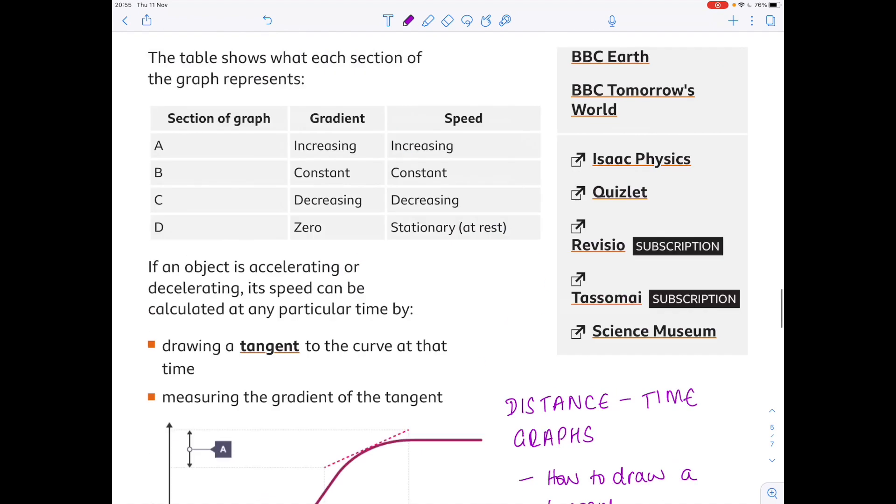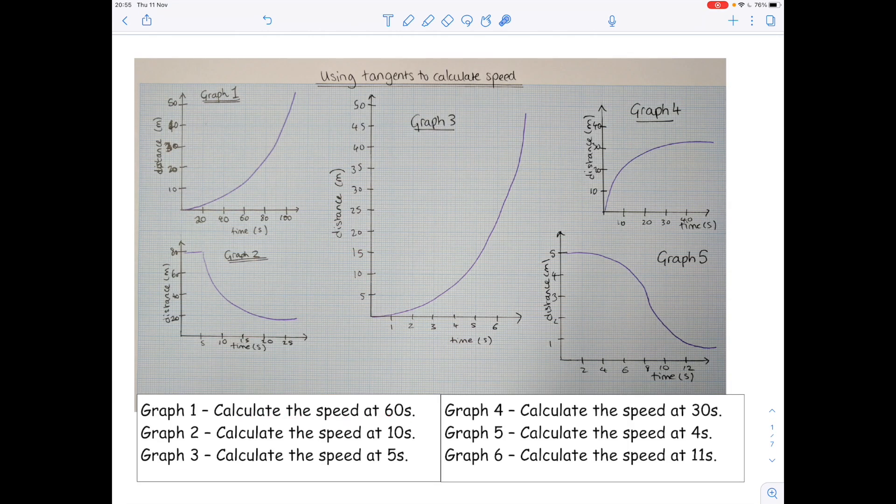And I'm going to show you an example of that now. In graph one we're being asked to calculate the speed at 60 seconds so we need to get familiar with drawing ourselves a tangent. So let's put a little dot where that 60 seconds is and I need to draw a tangent which goes through that dot that's here and I'm choosing to finish it exactly here. Why?